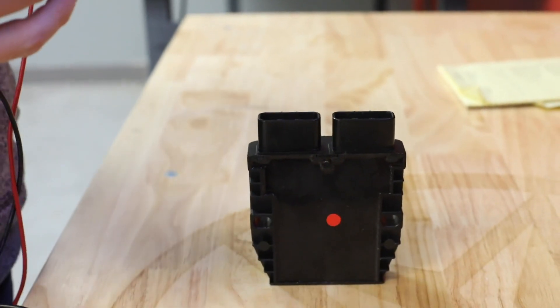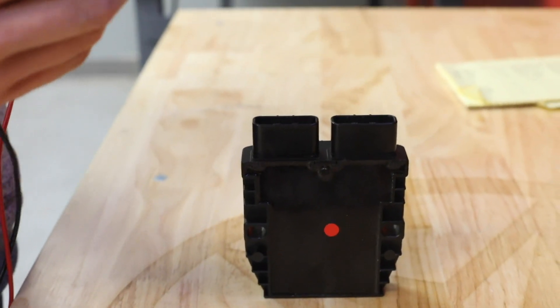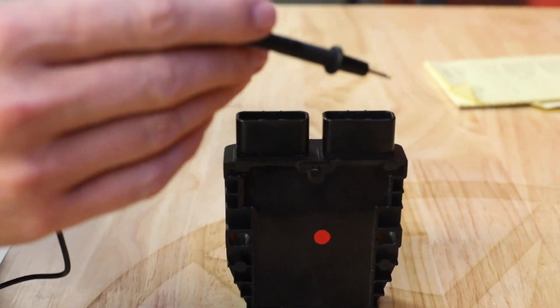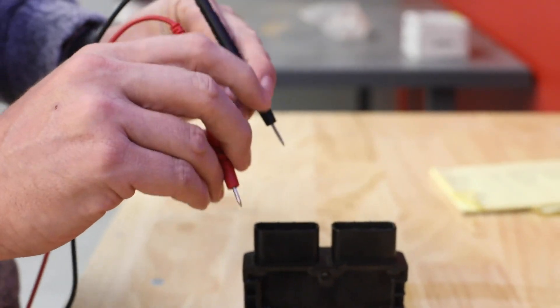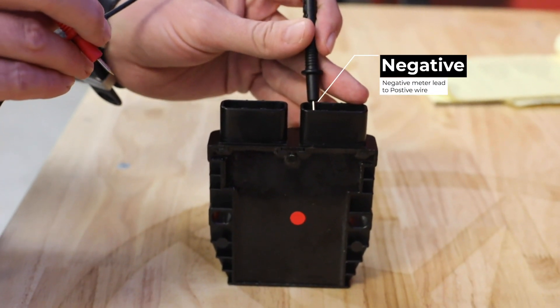So what we're going to do starting with our positive bias test, we're going to connect our negative meter lead to the positive lead on our regulator.